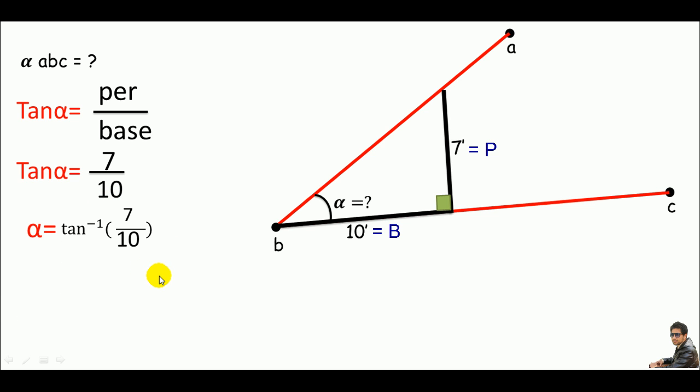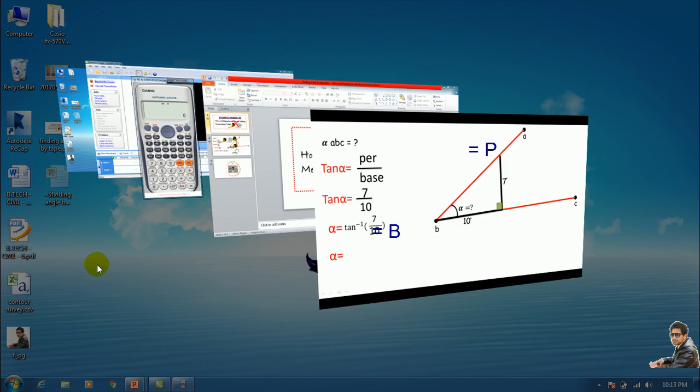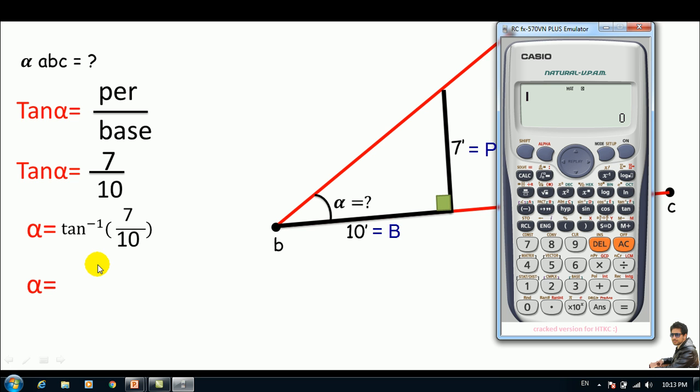We'll get an angle. Let me use my calculator over here. Let me bring it down. If you see, this is tangent inverse. So click shift over here, and tangent, this will bring tangent inverse. And this is 7 by 10.